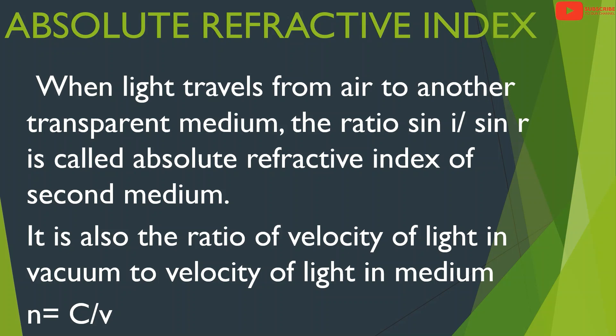Absolute refractive index is equal to the velocity of light in vacuum divided by the velocity of light in the medium. That is, n is equal to c divided by v. Here c is the velocity of light in vacuum, and v is the velocity of light in the medium. So n equals sin i divided by sin r equals c divided by v. Refractive index is a dimensionless number — it has no unit.